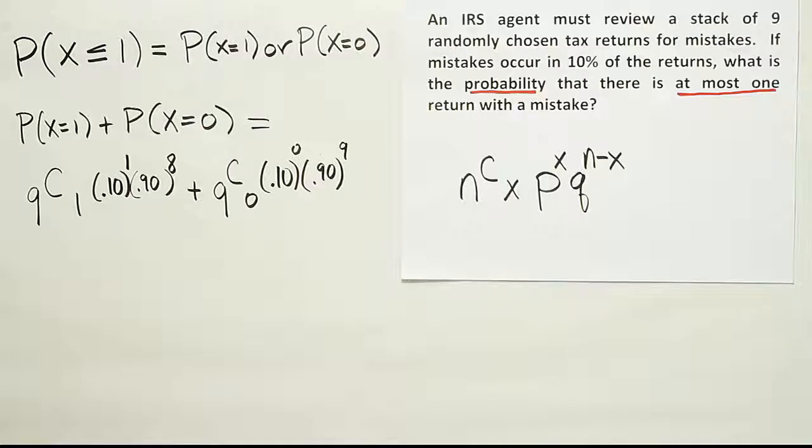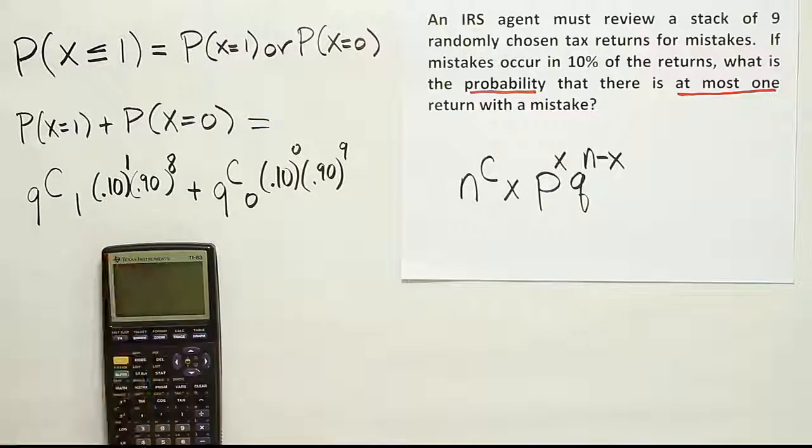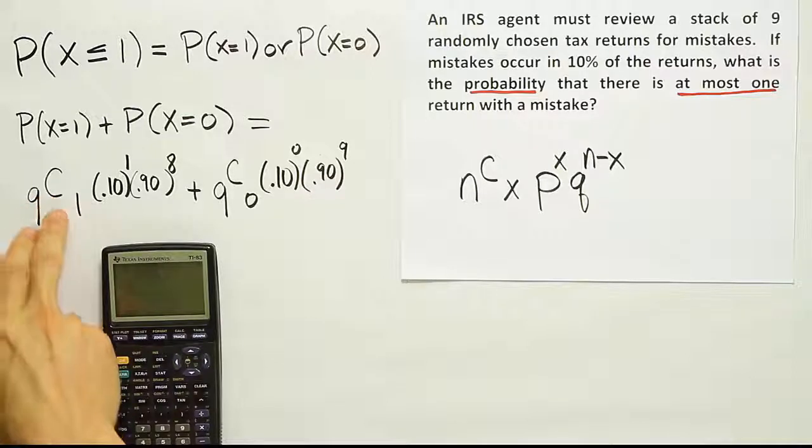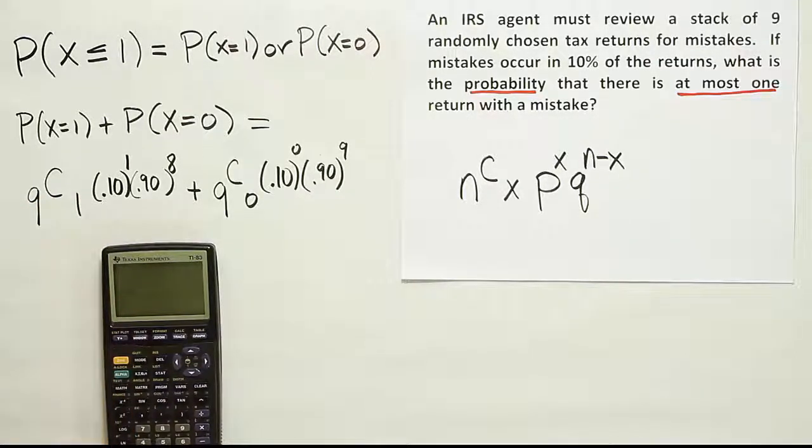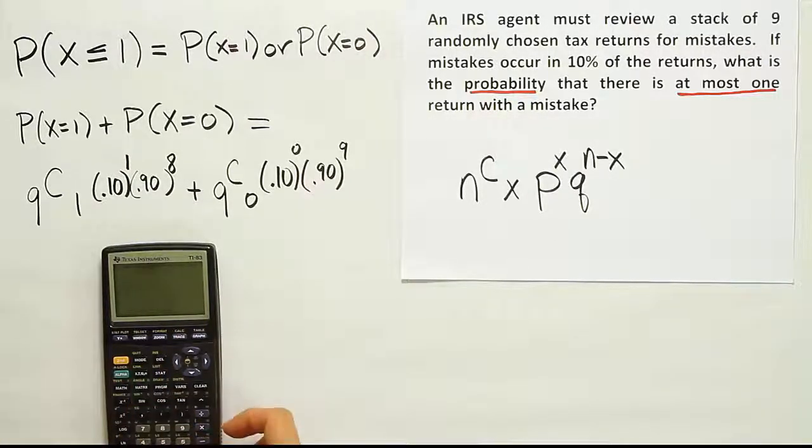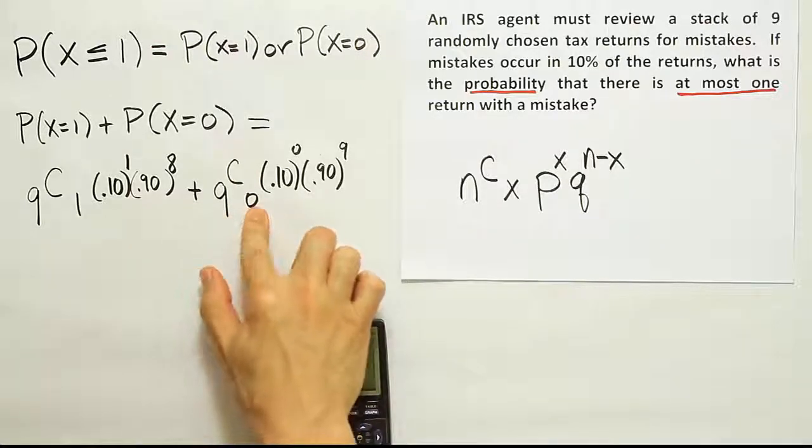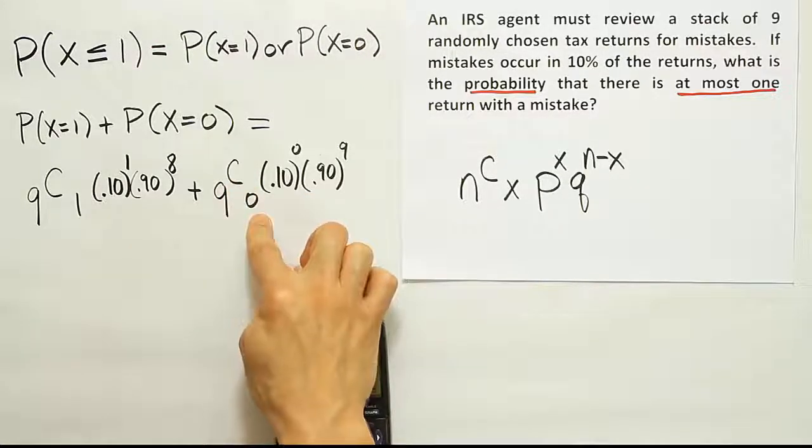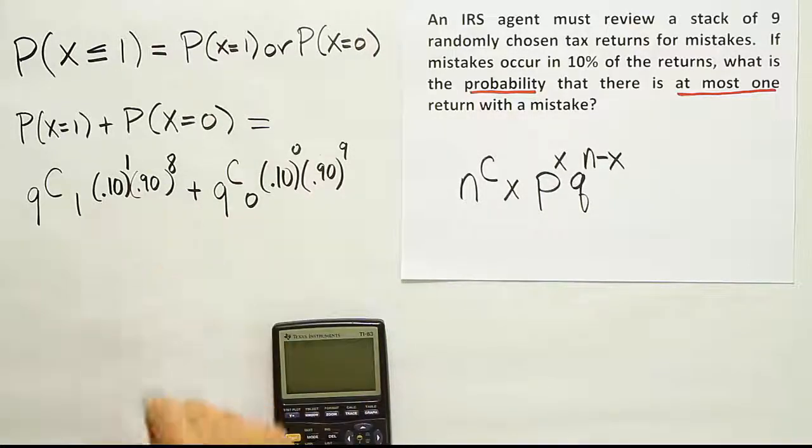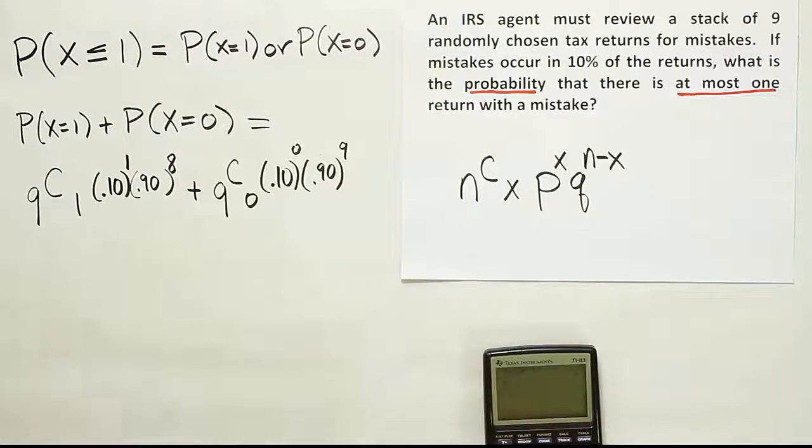Now the rest is calculator work. So nine choose one—you don't really need a calculator for that. Anytime you have n choose one, it's always just going to be this answer. So it'll be nine in this case. If you wanted to check that, you hit nine in this calculator, Math, PRB, option three, the number one. You'll see it comes out to be nine. This one, nine choose zero. Anytime you're choosing zero, nine out of nine things, you want to choose no things. Just one way always. Anything with a choose zero is just one.